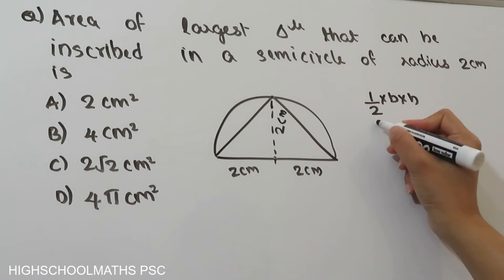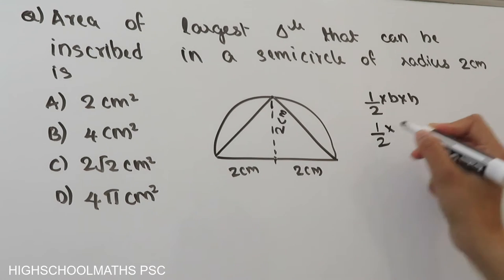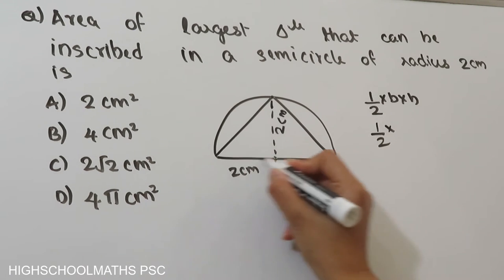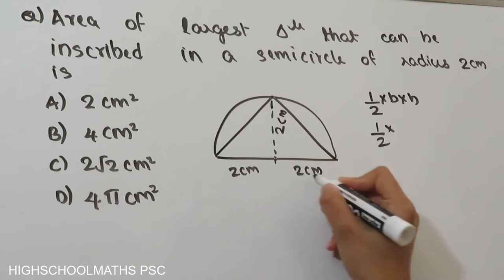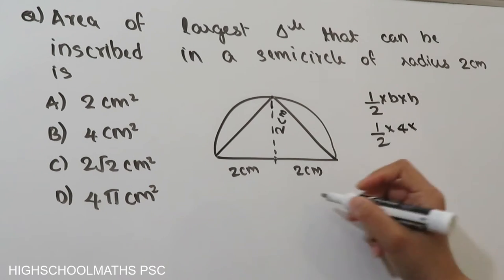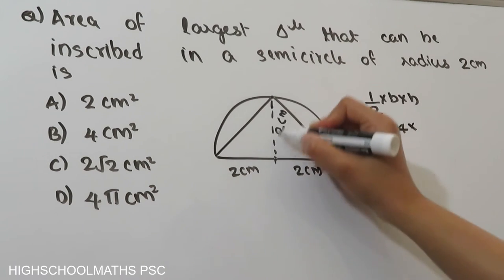Looking at this triangle: the area is half into base into height. The base of this triangle is 4, which is the diameter, into the height.